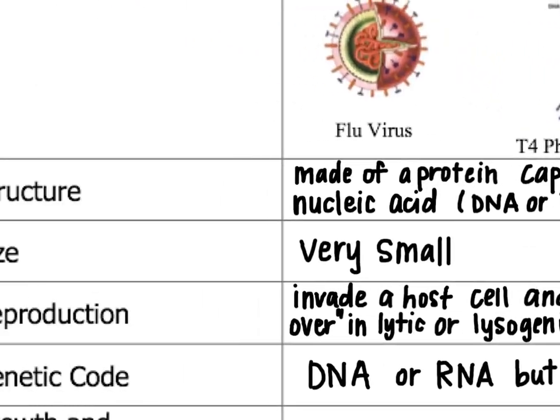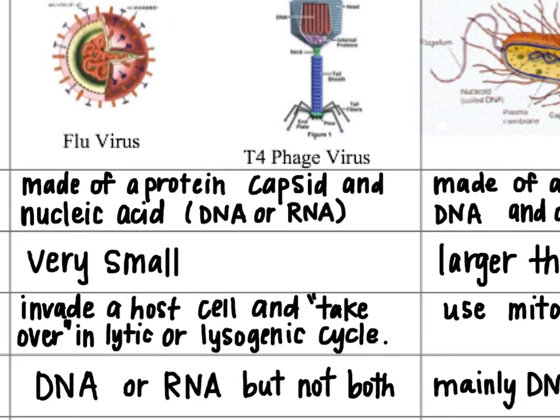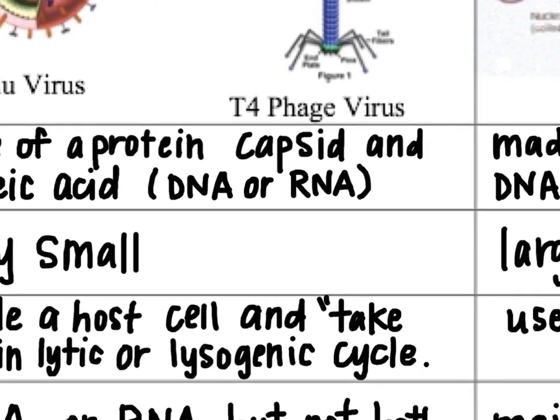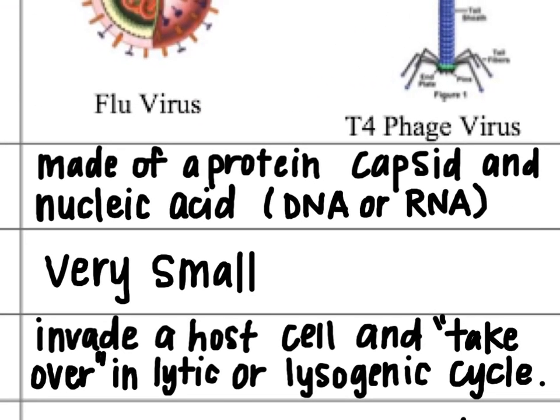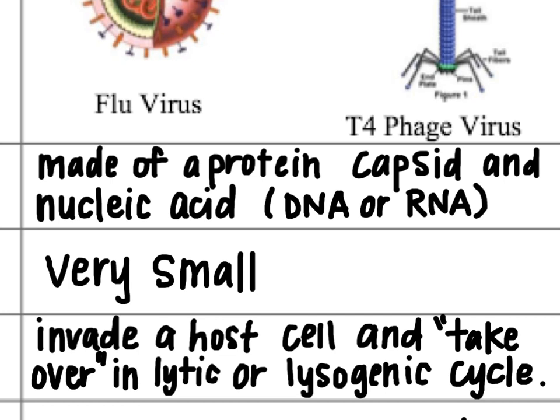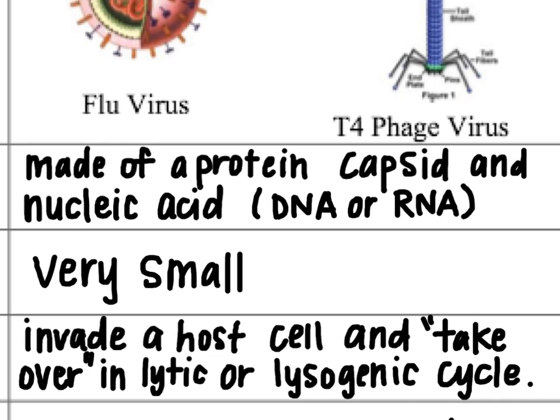The structure of a virus is that it is made of a protein capsid and nucleic acid. The protein capsid is the outer covering — it's made of protein. And inside the capsid there's either going to be DNA or RNA, which is made of nucleic acid. Viruses will have either DNA or RNA, but never both.